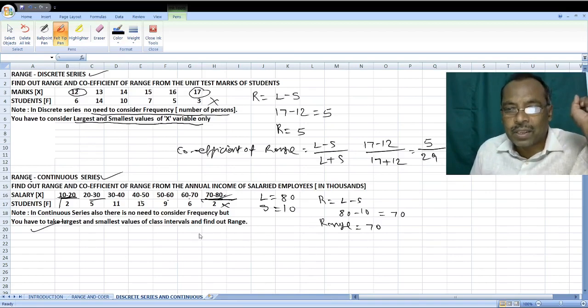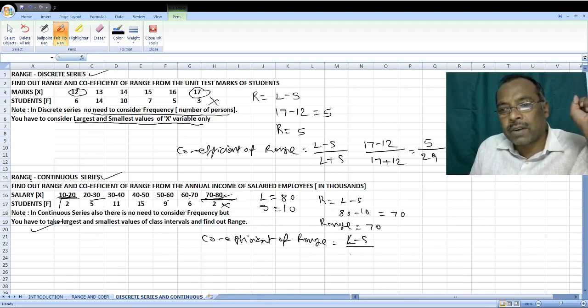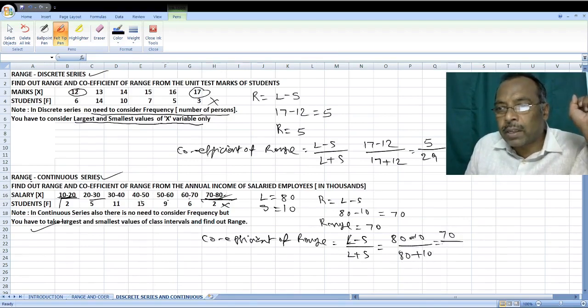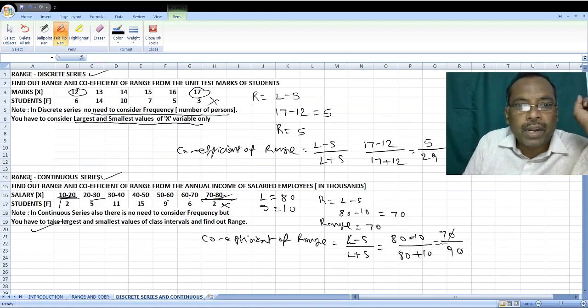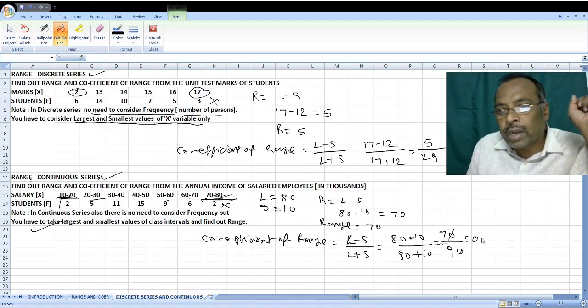Let us find out coefficient of range. What is the formula? L minus S divided by L plus S. L minus S is equal to 80 minus 10 divided by 80 plus 10. That comes to 70 divided by 90. You can cancel 0, 0. Now, you have only 7 by 9. If you divide that, 7 divided by 9, that comes to 0.7778. This is the answer.